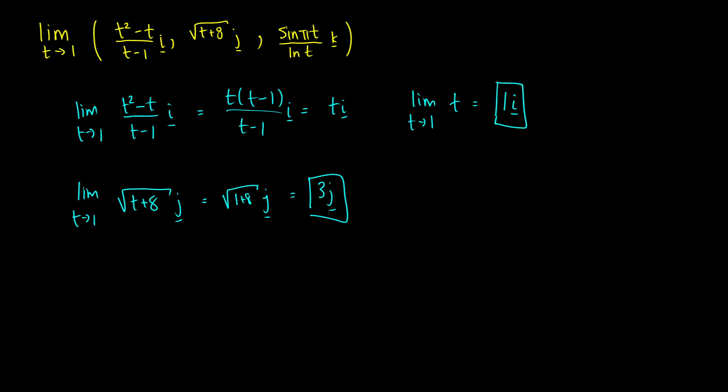So those first two components weren't too bad, but what about our third component? Limit as t approaches one of sine pi t over ln t times k. We're going to use L'Hospital's rule here. So we're going to take the derivative of the top and the bottom in order to do this.